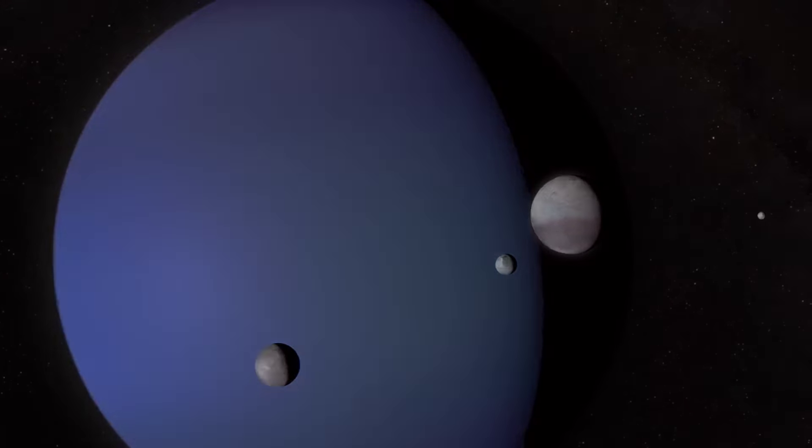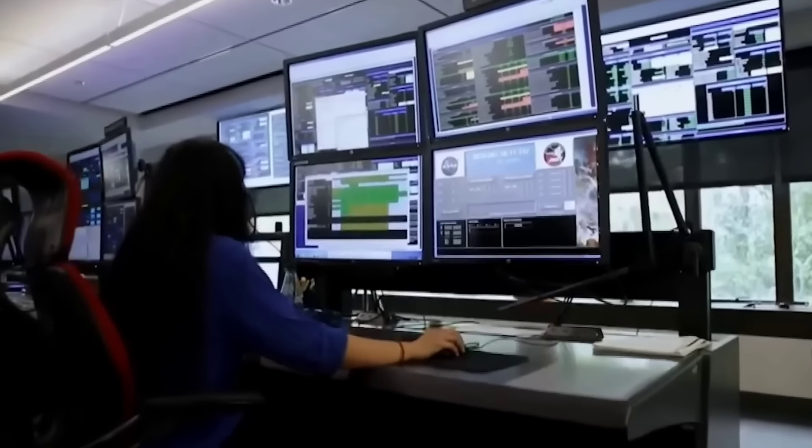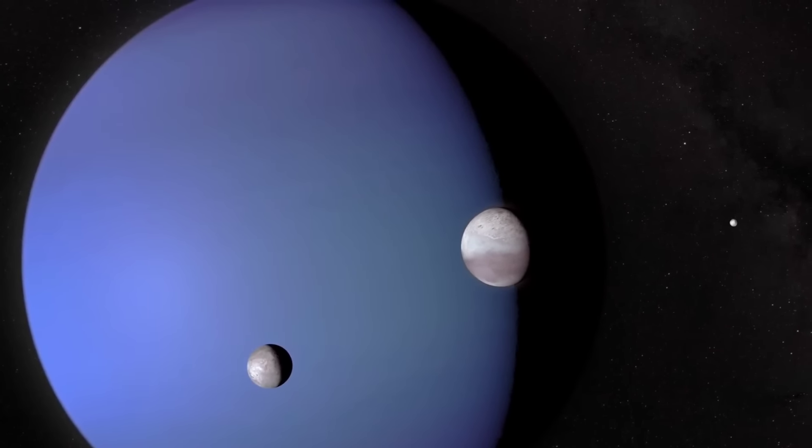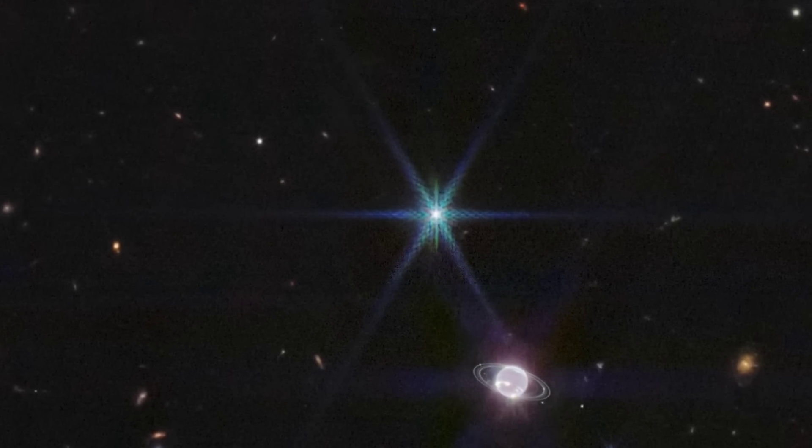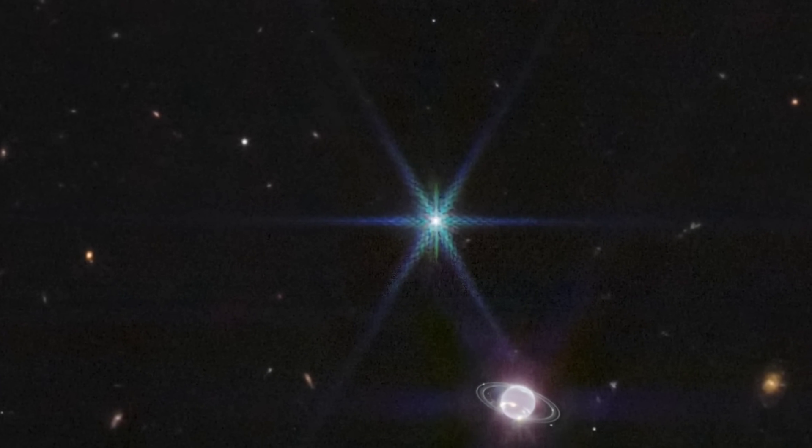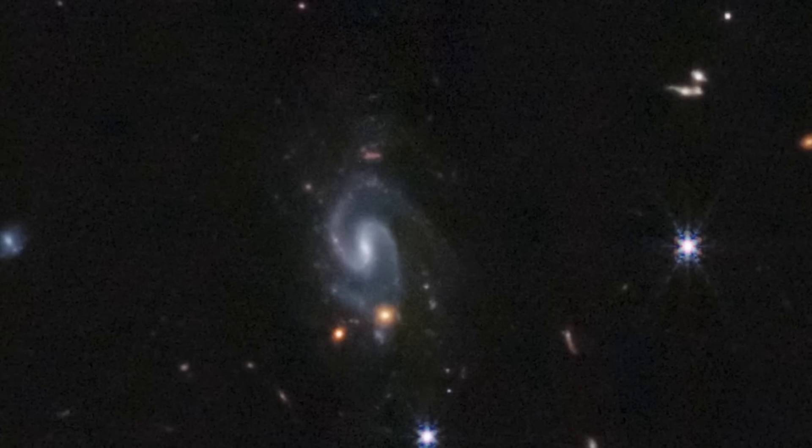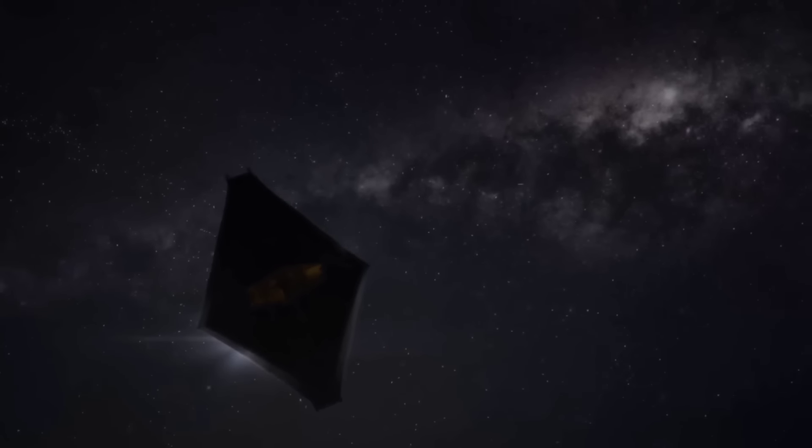Webb also captured seven of Neptune's 14 known moons. Dominating this Webb portrait of Neptune is a very bright point of light sporting the signature diffraction spikes seen in many of Webb's images, but this is not a star. Rather, this is Neptune's large and unusual moon, Triton. Covered in a frozen sheen of condensed nitrogen, Triton reflects an average of 70% of the sunlight that hits it. It far outshines Neptune in this image because the planet's atmosphere is darkened by methane absorption at these near-infrared wavelengths.